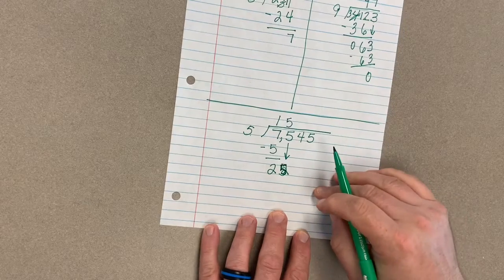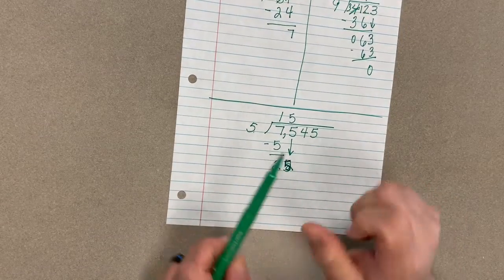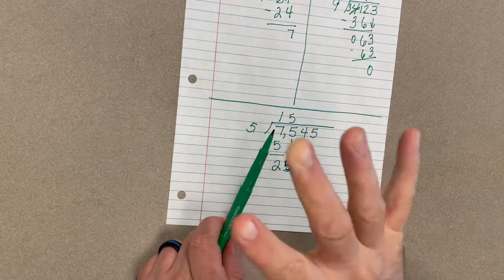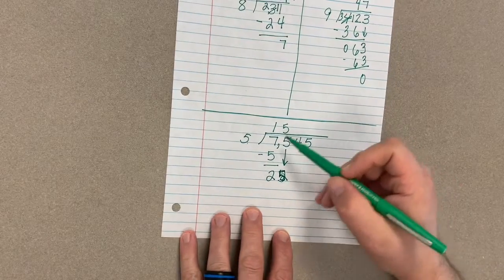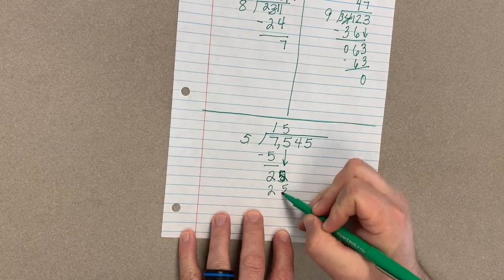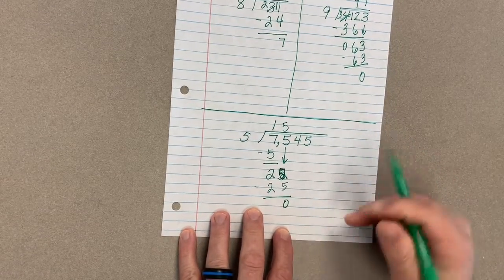25, 5 into 25 goes 5 times. Again, that's something you just got to know. If you count by 5s, 5, 10, 15, 20, 25 is 5. So we're going to multiply that through, get 0. Awesome.